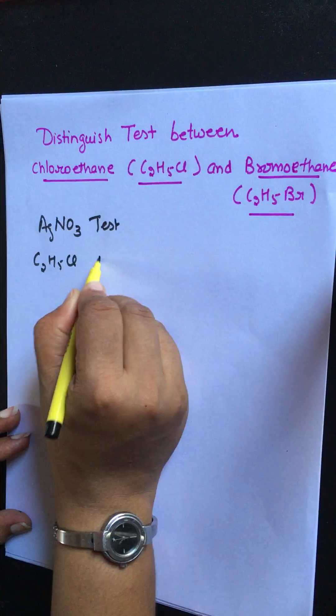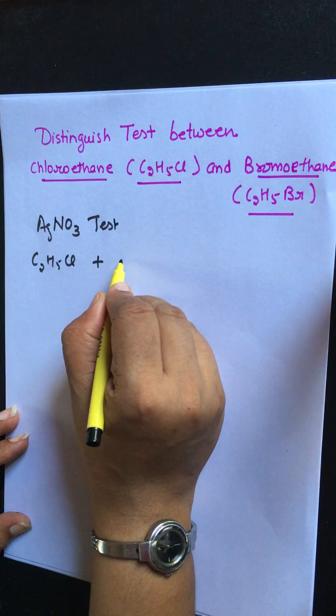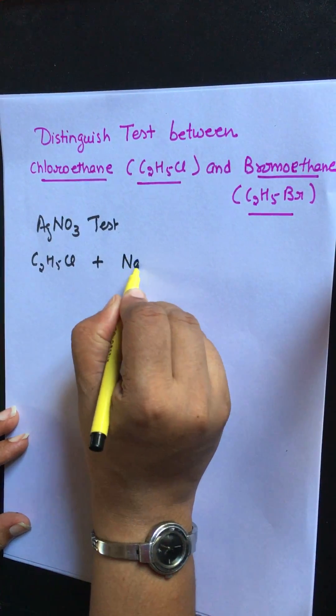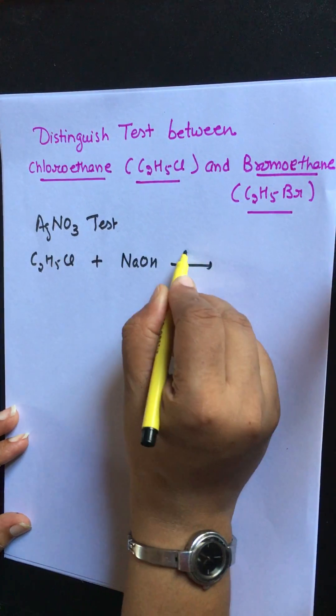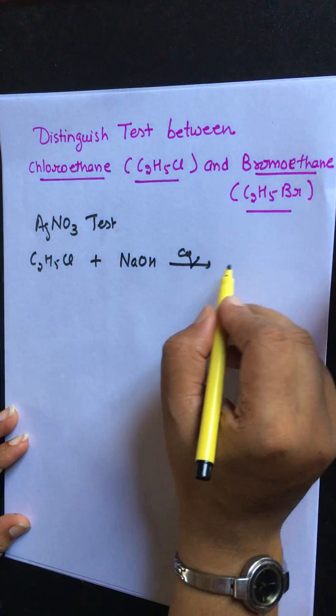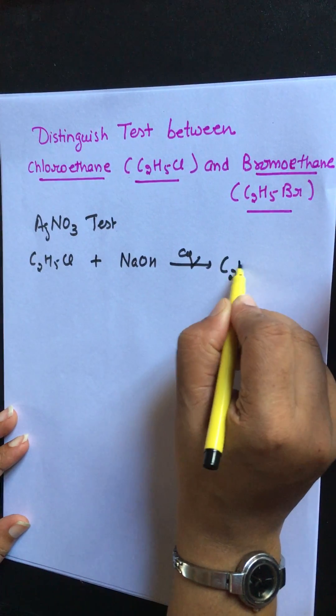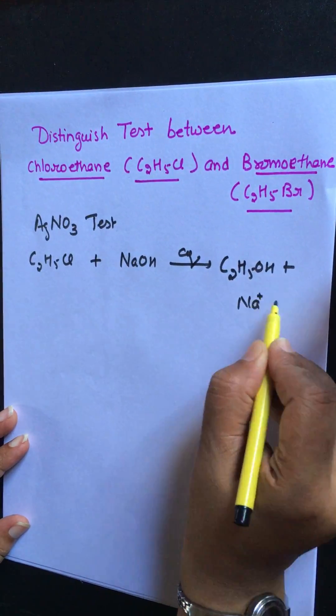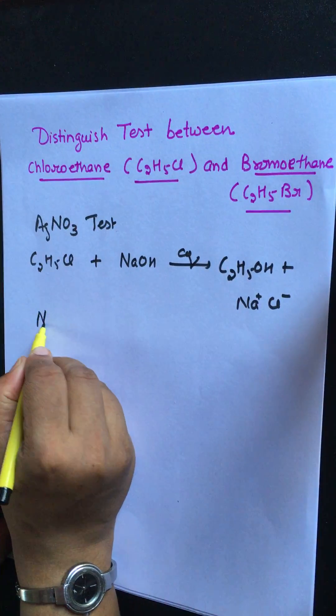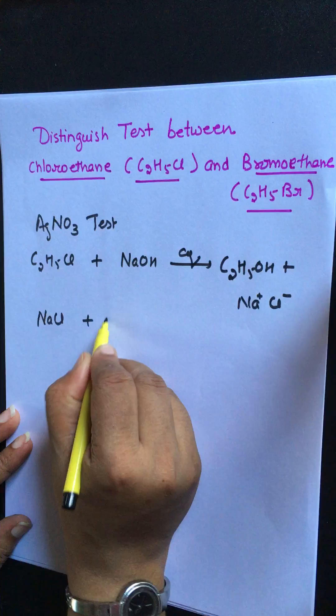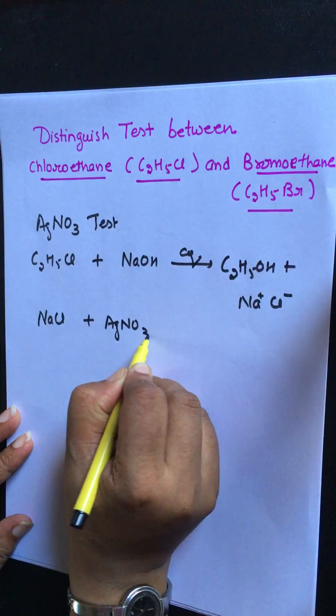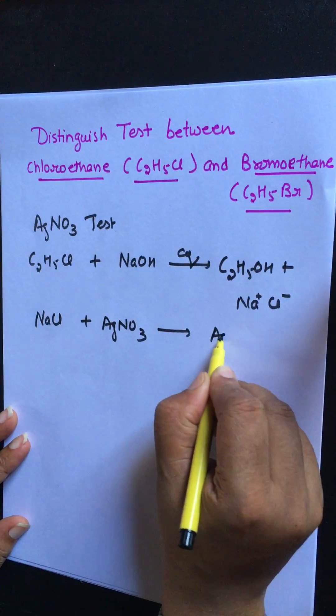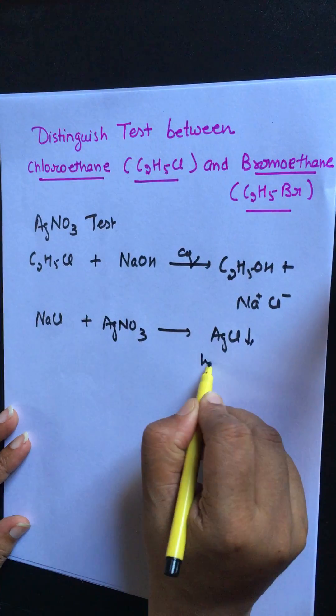Chloroethane firstly on reaction with aqueous alkali gives substitution reaction as C2H5OH plus NaCl. And this NaCl solution in presence of AgNO3 solution gives AgCl white precipitate.